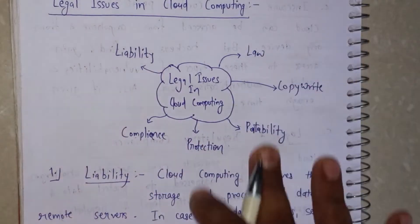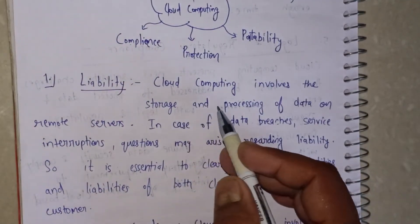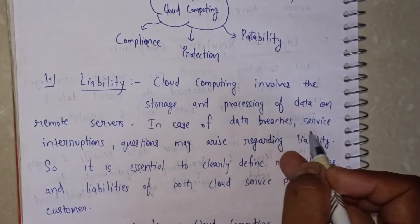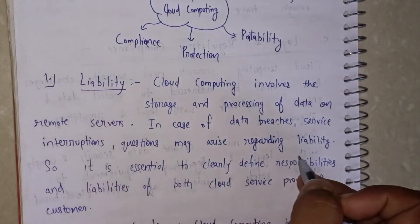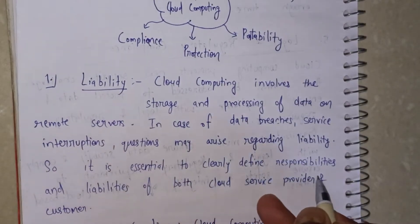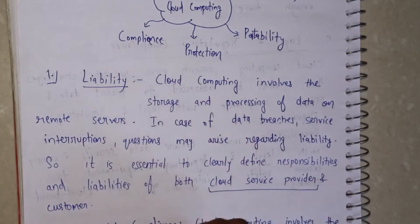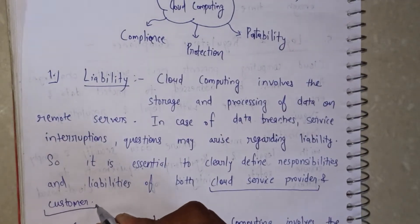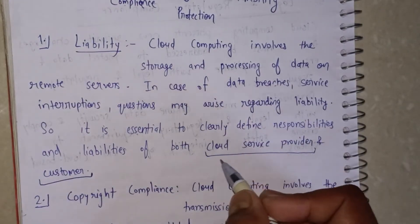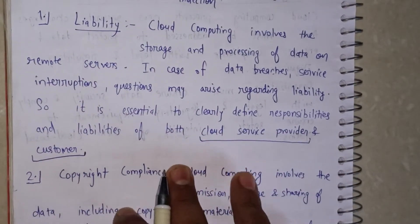The first issue is liability. In cloud computing, storage and processing of data happens on remote servers. In some cases, data breaches and service interruptions occur. It is essential to clearly define the responsibilities and liabilities of both the provider and the customer. Whatever data a client sends to the provider, the admin has the responsibility not to leak or share that data with any other person.